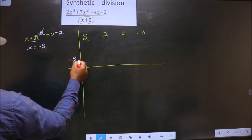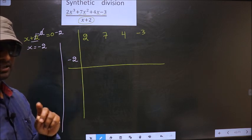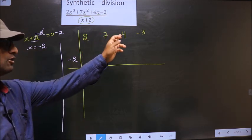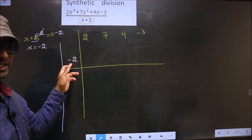This you should write here. This is your step 1. Writing coefficients taken from the numerator here and x value that you got from the denominator here.